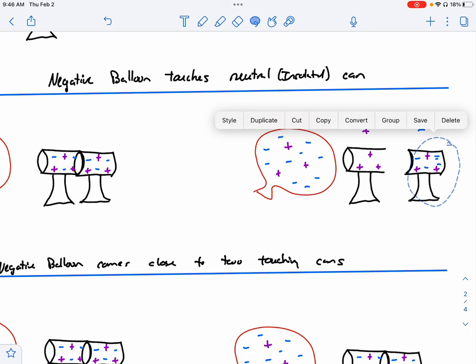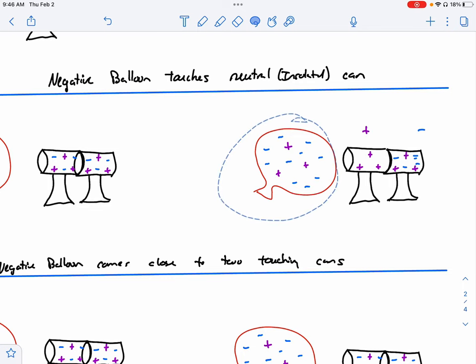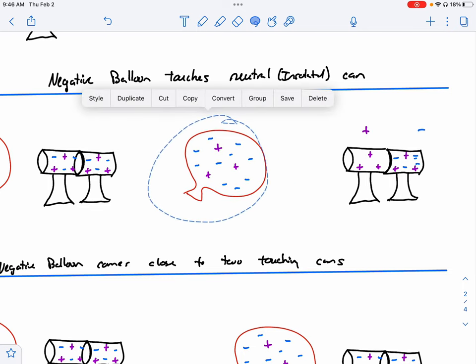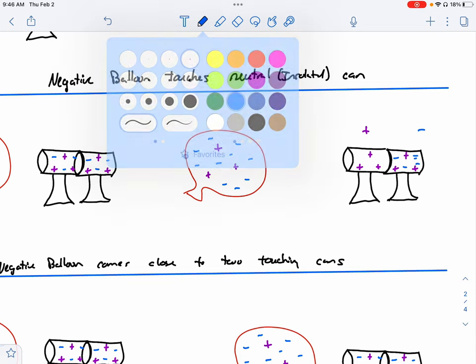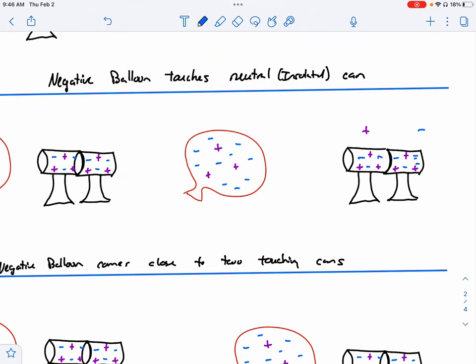Okay, so if I was to pull the balloon away before I separated those, it would go back to being neutral. All right, there would be negatives and positives evenly spread out in the conductor again. Okay, so the timing is really important. So pay attention to how they're explaining those types of things as we go.